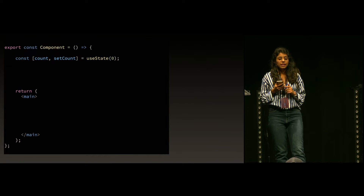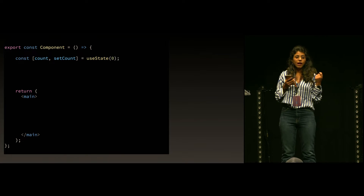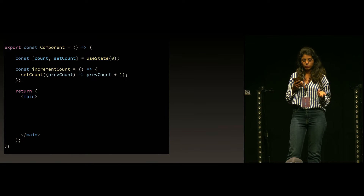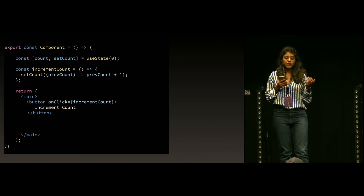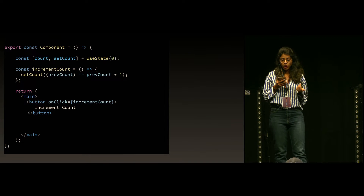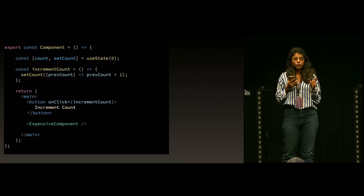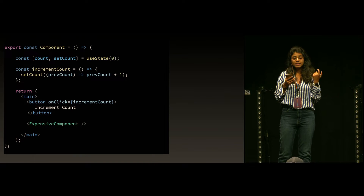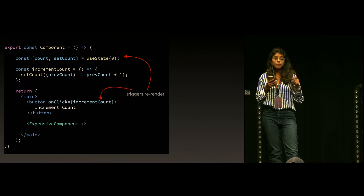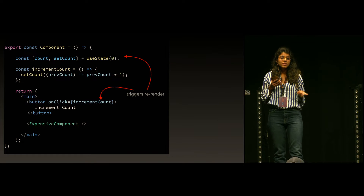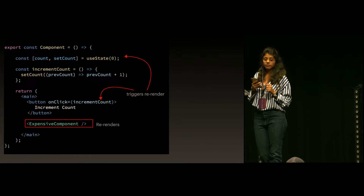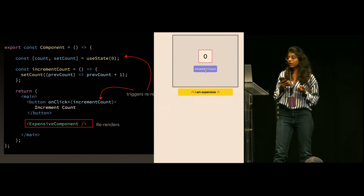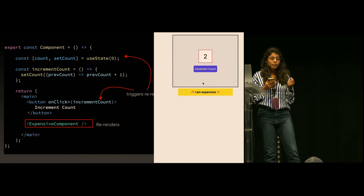Let's take an example. We have a component with a count as a state variable, an incrementCount function, and a button that increments the count. We also have an expensive component which is a slow component. Whenever the button is clicked, the parent re-renders, and because of that the expensive component also gets re-rendered. If we try to run this, clicking the increment button makes the UI a bit laggy.